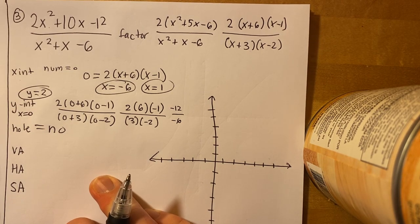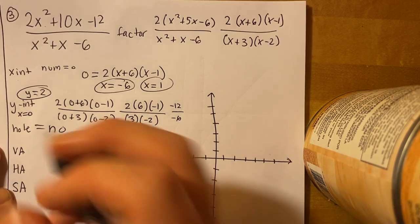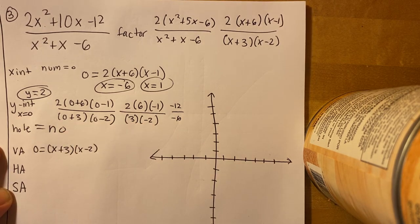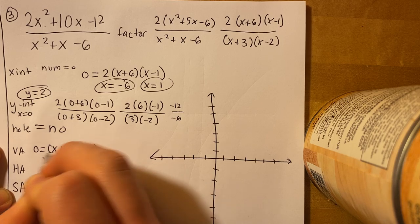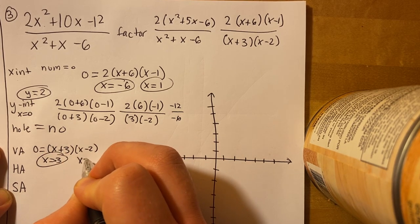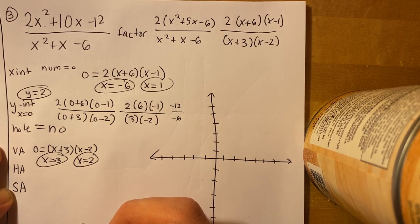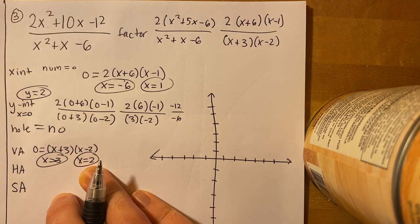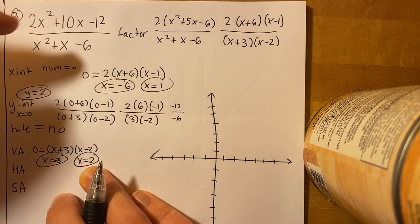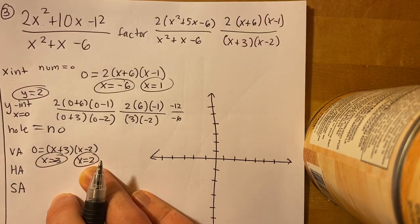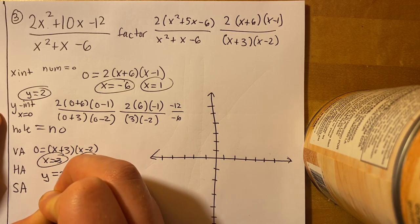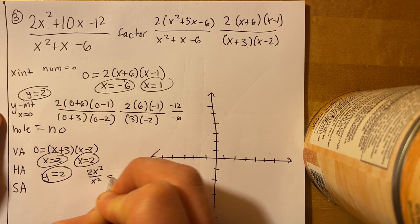For the vertical asymptotes, set the denominator equal to zero: (x + 3)(x − 2) = 0, giving x equals negative 3 and x equals 2 — two vertical asymptotes. For the horizontal asymptote, the numerator has degree 2 (leading coefficient 2) and the denominator also has degree 2 (leading coefficient 1). So 2 divided by 1 equals 2, meaning the horizontal asymptote is at y equals 2. There's no slant asymptote since the degrees are equal.